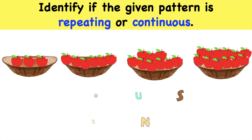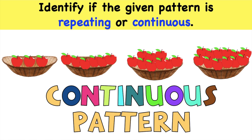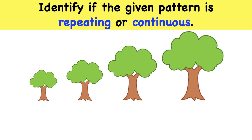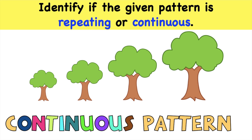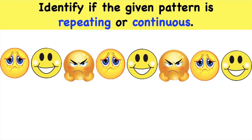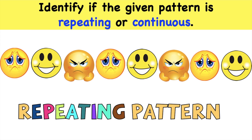The correct answer is continuous pattern, because as you can see, the numbers of apples become bigger and bigger — that's why it is a continuous pattern. How about this one? Is it repeating or continuous? That's correct, children — it is continuous pattern. How about this one? Is it repeating or continuous? Very good — it is a repeating pattern, because the terms are: sad, happy, angry, sad, happy, angry, sad, happy. That is a repeating pattern.